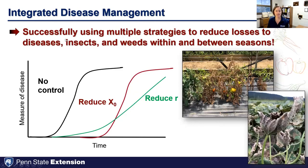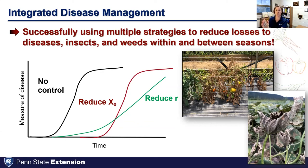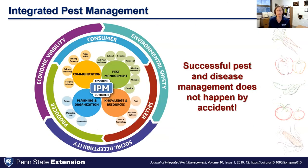When thinking about integrated disease management — really integrated pest management in general — we're looking to use multiple strategies to reduce losses, whether from diseases, insects, or weeds, within the season or between seasons. Everything is interrelated. We're looking to reduce disease pressure at the beginning of the season so that disease might not develop until later, and when it does develop, it develops at a slower rate. The primary goal is to push disease back to later in the season and have it not be as severe, making it easier to manage.